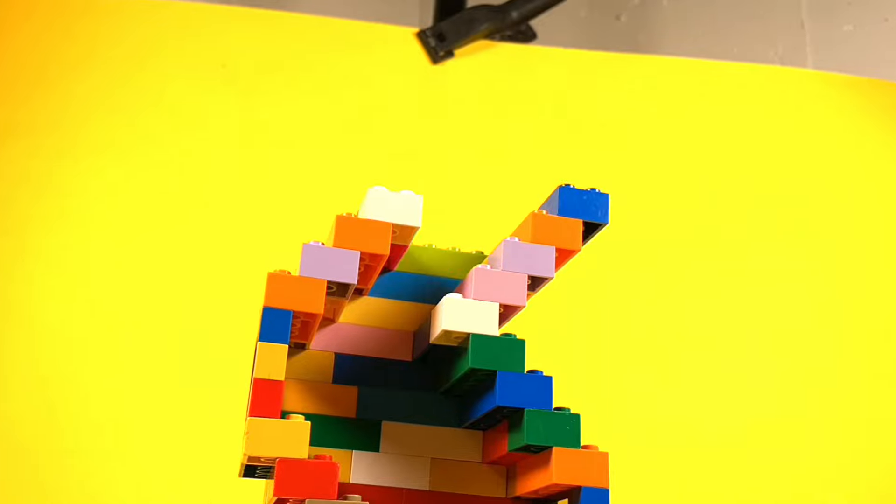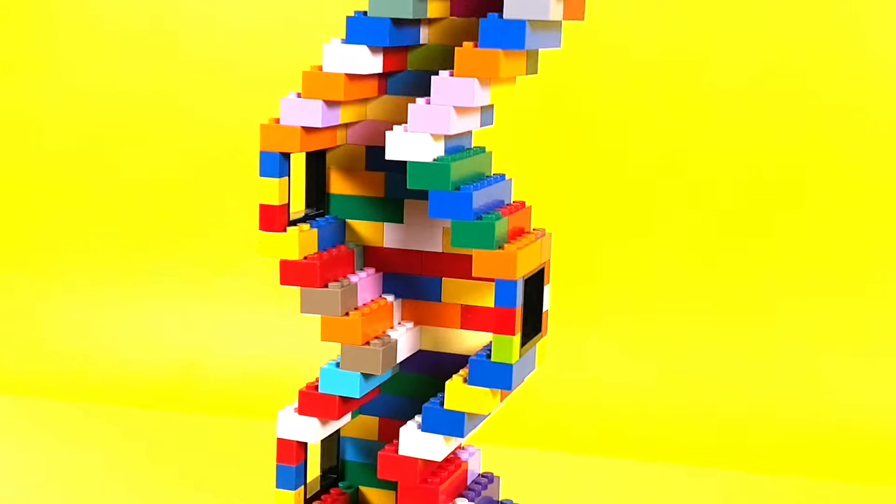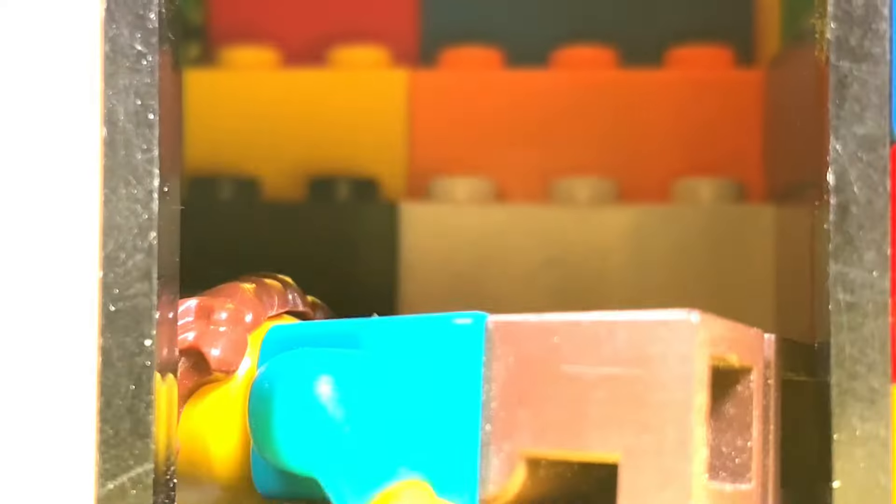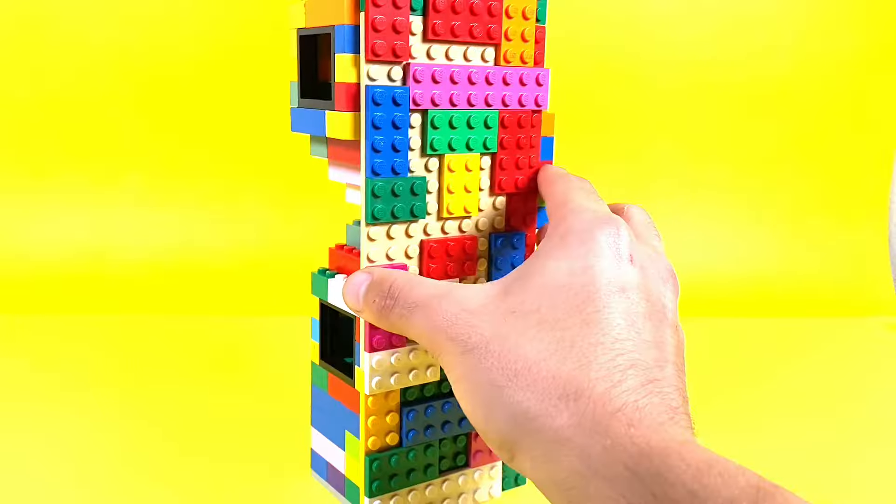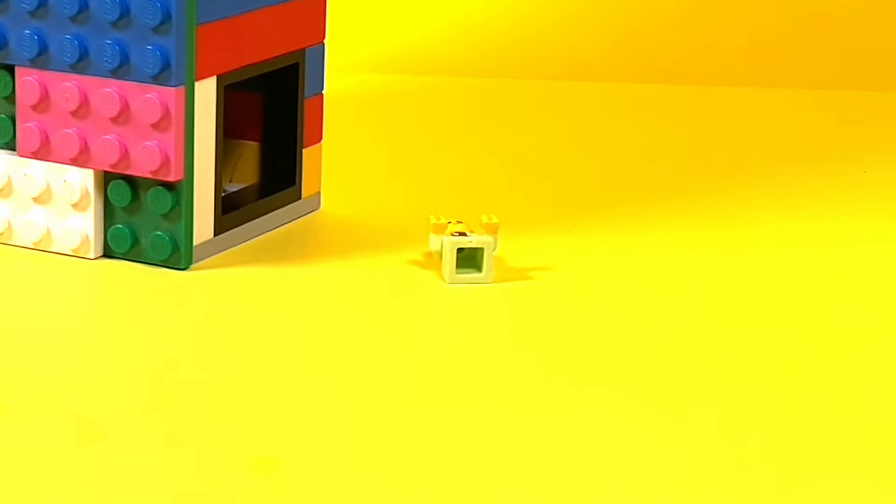So for the second challenge, we have sort of a zigzag tower. The idea of this tower is to drop the minifigs from the top, and as they're falling, they have a chance to fly out one of these windows, which is the elimination route. But if you make it to the bottom, then you are safe. Let's put the cover on, and again, with the baby. What? The baby made it again!